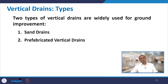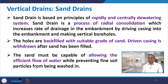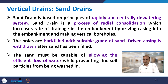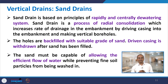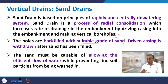Two types of vertical drains are widely used: sand drains and prefabricated vertical drains (PVD). Sand drains, as the name suggests, are made from sand. They are based on the principle of rapid central dewatering through radial consolidation, which increases the rate of drainage by driving a casing into the embankment, making vertical boreholes. These holes are then backfilled with a suitable grade of sand, and the casing is withdrawn after filling.